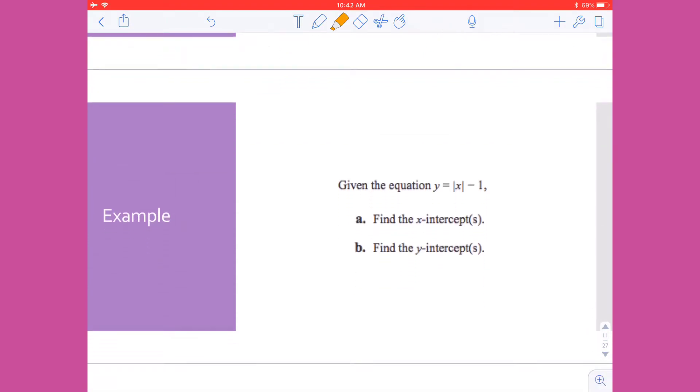Looking at an example, given this following equation, y equals the absolute value of x minus 1, we want to find the x-intercepts and the y-intercepts. Keep in mind that with the x-intercept, we know already that y has to equal zero, so we can plug in zero for y and solve. With our y-intercept, we know that x equals zero, so we can plug in zero and solve for y.